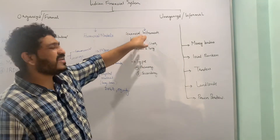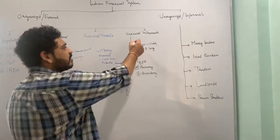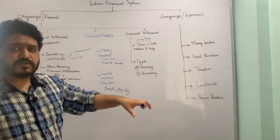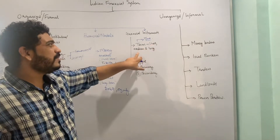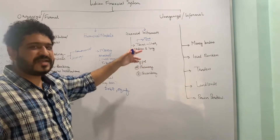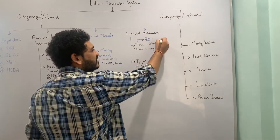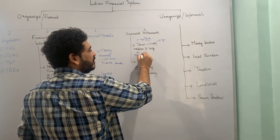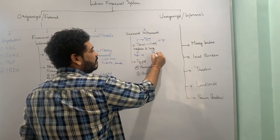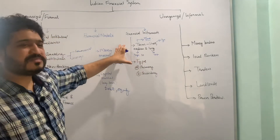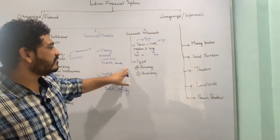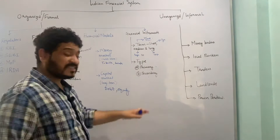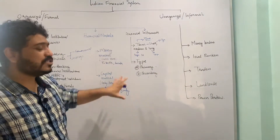The fourth component is financial instruments. These depend upon the term — that is, the length of time for which the instrument is used or traded — which can be short term, medium term, or longer term. Short term is up to one year, medium term is greater than one year but less than ten years, and long term is ten-plus years. Instruments can also be classified as primary and secondary.